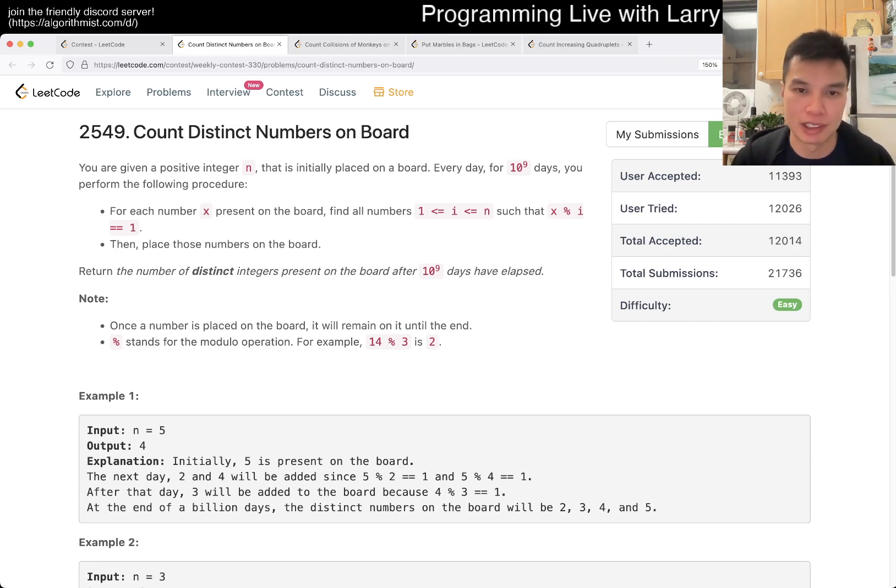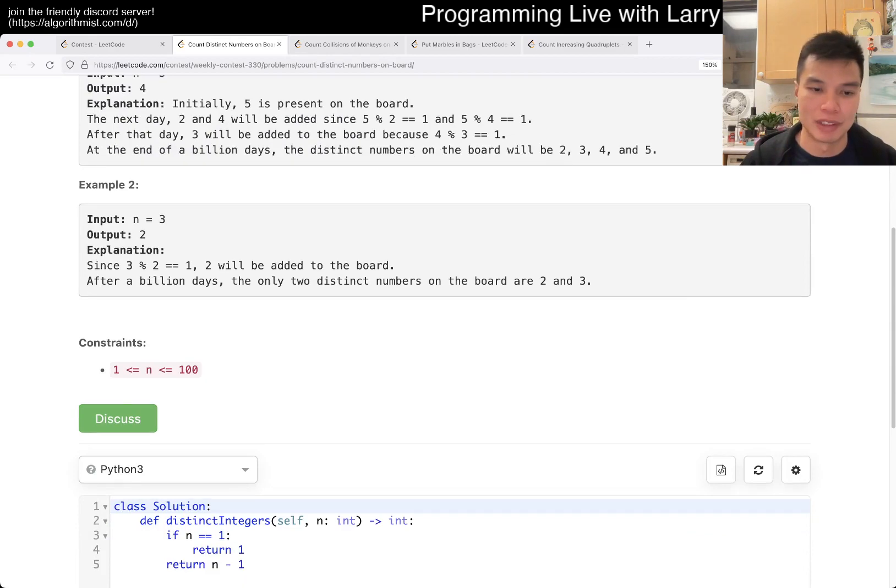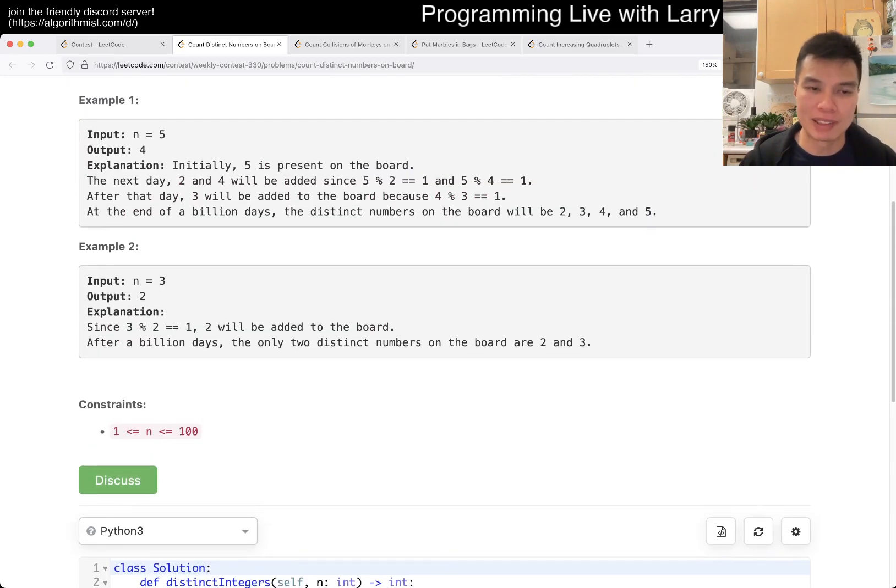So I did actually get a wrong answer on this one. The wrong answer is just the case where n is 1, because in that case you put in the 1 and then that's it. In every other case, you can basically get every other number except for 1, because no number mods another number will give you 1, right? Because any number modded by 1 will always be 0.